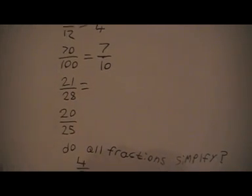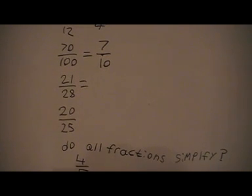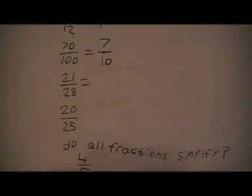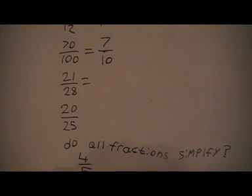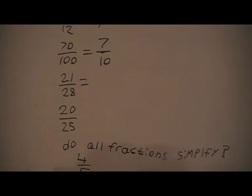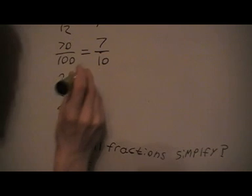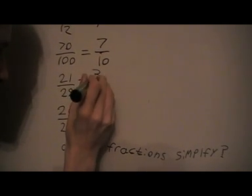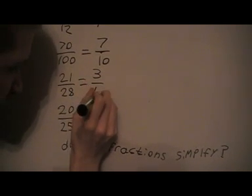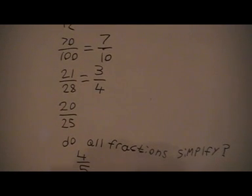Next one here, the highest common factor of 21 and 28 is 7. So I'm going to divide the top and the bottom by 7. When I divide the top, I get 3. When I divide the bottom, I get 4. So that simplifies to 3 quarters.